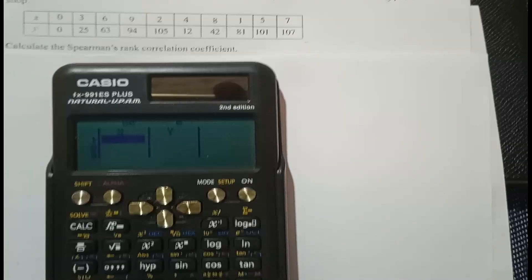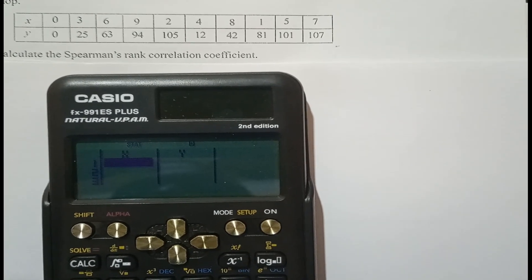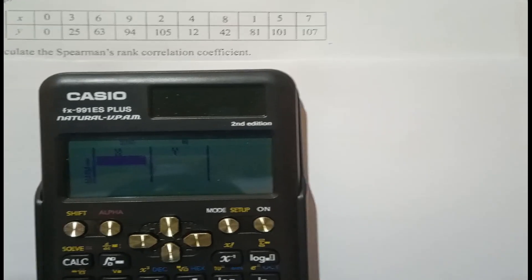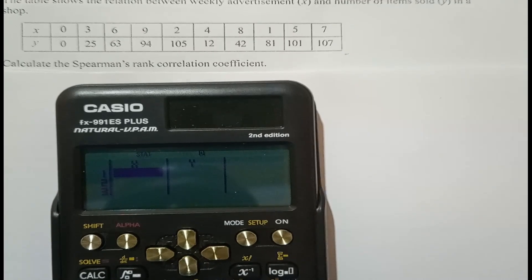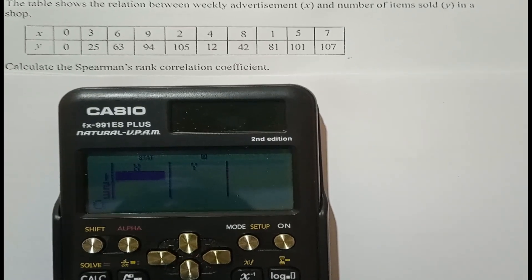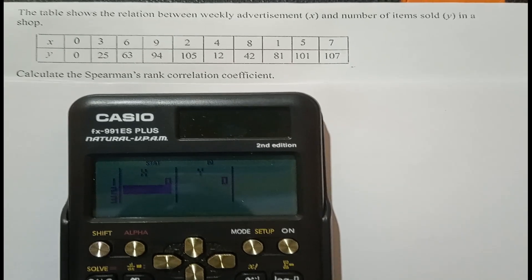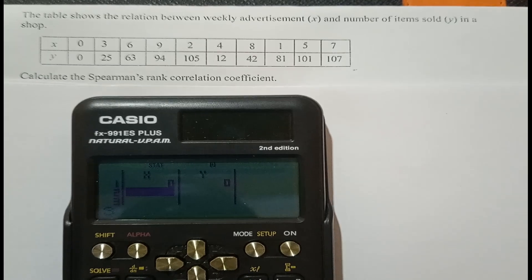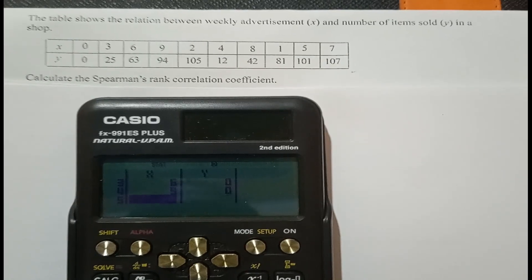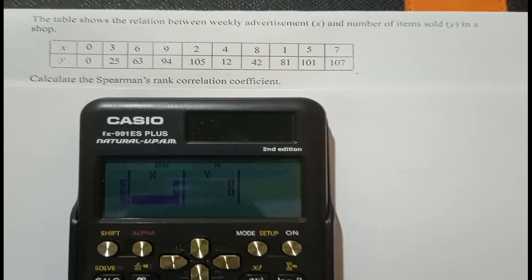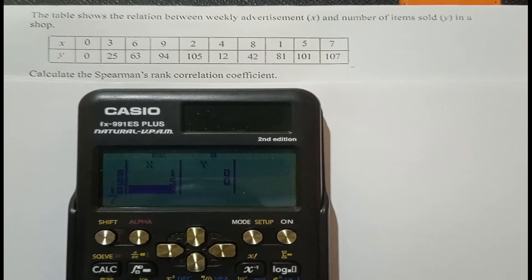The cursor is under x, so we need to enter the x values. When we enter each value we press equals for the cursor to drop, then keep entering values and pressing equals until we get to the last one. The values are: 0 equals, 3 equals, 6 equals, 9 equals, 2 equals, 4 equals, 8 equals, 1 equals, 5 equals, and 7 equals. It's finished.